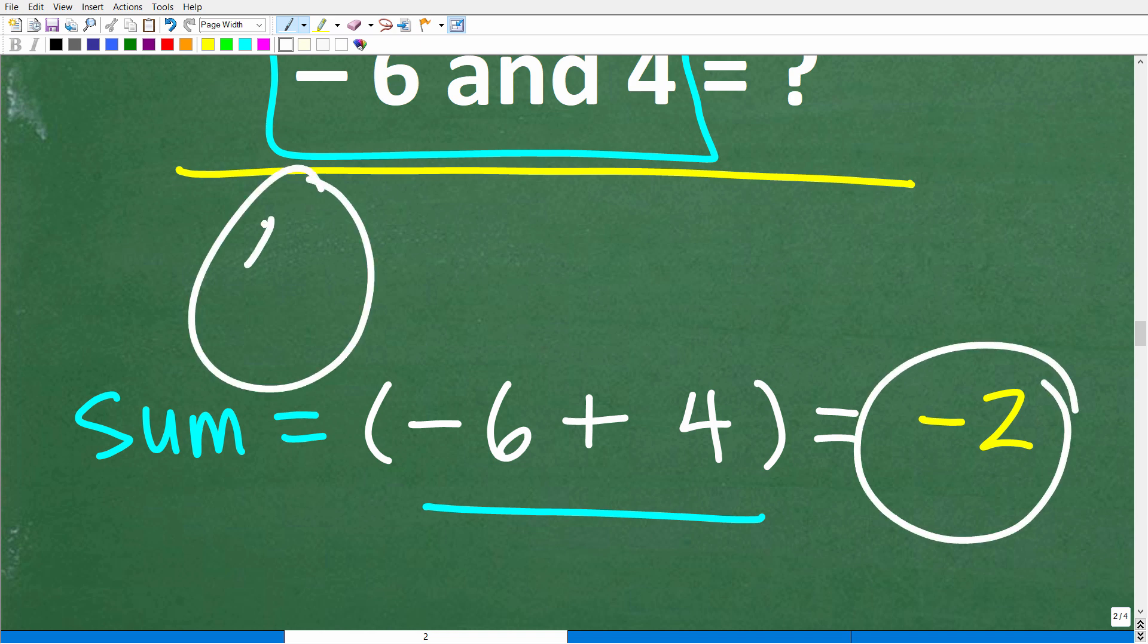So don't feel bad if you don't remember how to add positive and negative numbers. Again, I'm going to give you some great suggestions here in just one second how you can learn and improve on all this stuff. Alright, so again, the sum of negative 6 and 4 is negative 6 plus 4, which is negative 2.